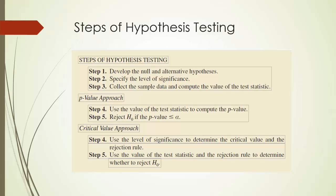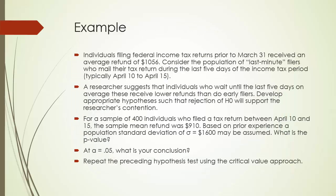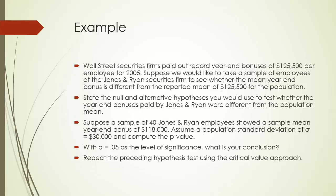Here is the summary of how we conduct hypothesis testing. We begin with the development of null and alternative hypotheses, then specify the alpha value or our significance level. In the next step, we collect sample data and compute the test statistic. Then we compute either p-value or critical value. In the end, we can draw our conclusion whether to reject the null hypothesis. We have two examples of hypothesis testing of a population mean when population standard deviation is known. In the first example, it is a lower tail test. In the second example, it is a two-tailed test because we are testing whether they are different. Please give both examples a try with both approaches.